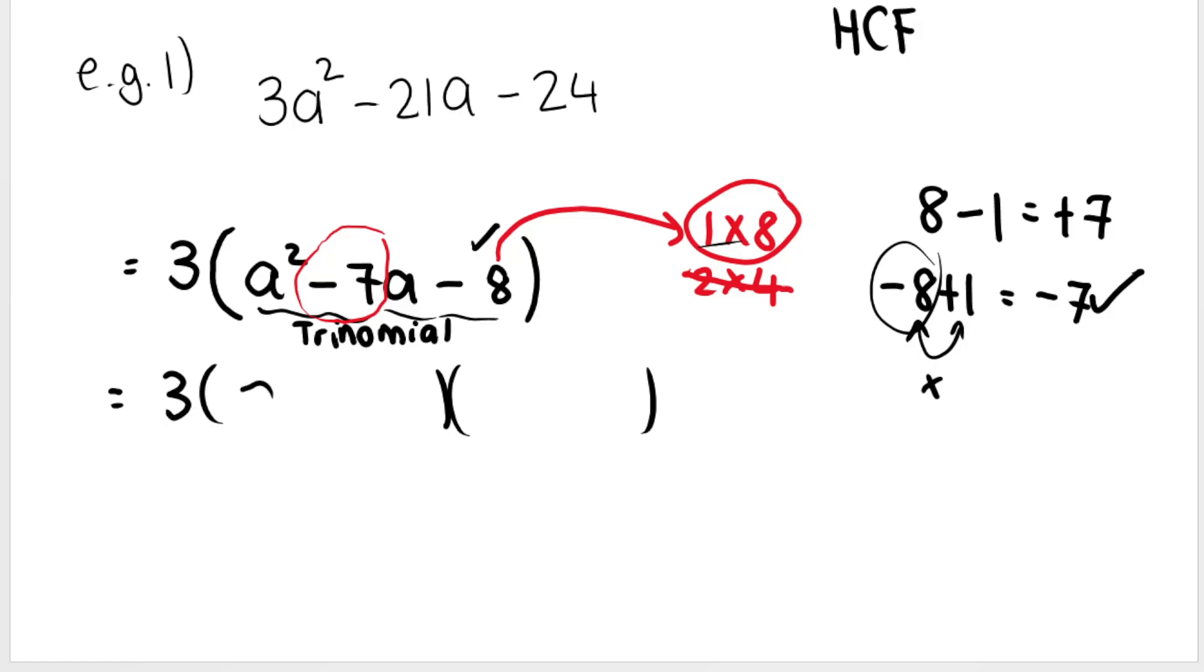So in my one bracket, I need negative 8, so a minus 8. In my second bracket, I need plus 1, a plus 1. Now you've factorized fully.